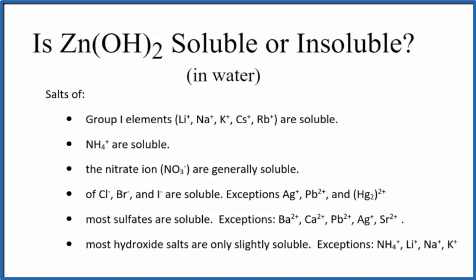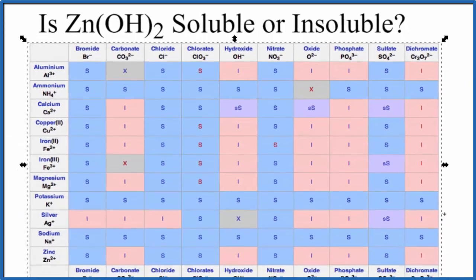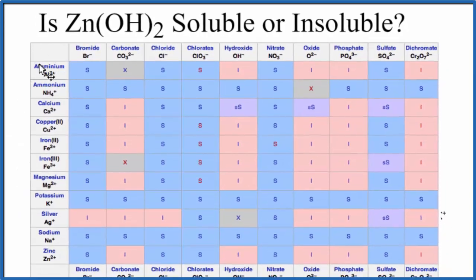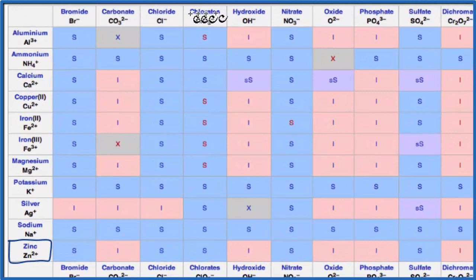We could also look at a solubility chart. So here is a solubility chart, and let's see if we can find zinc. Here's zinc right down here, Zn²⁺. Then we go across the top, the negative ions, the anions, and here's the hydroxide, OH⁻.